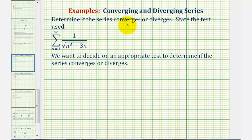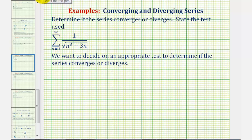We want to determine if the given series converges or diverges. To help us decide on an appropriate test, let's take a look at our infinite series. Notice how we have the sum of one divided by the square root of the quantity n cubed plus three n. If we ignore the plus three n, this series would resemble one divided by the square root of n cubed, which written using a rational exponent would be one divided by n to the three halves — a known converging series by the p-series test.